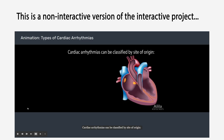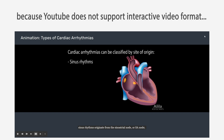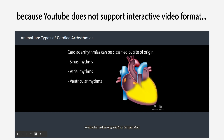Cardiac arrhythmias can be classified by site of origin. Sinus rhythms originate from the sinoatrial node, or SA node. Atrial rhythms originate from the atria. Ventricular rhythms originate from the ventricles.